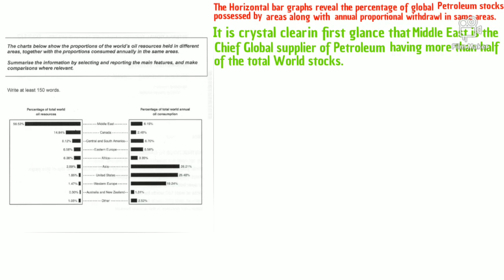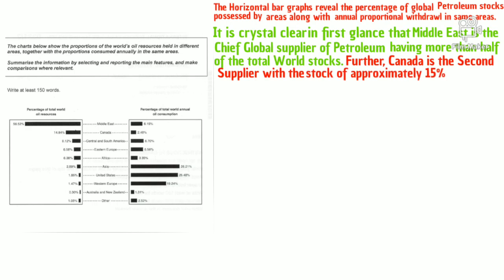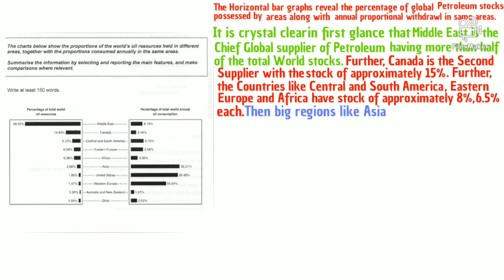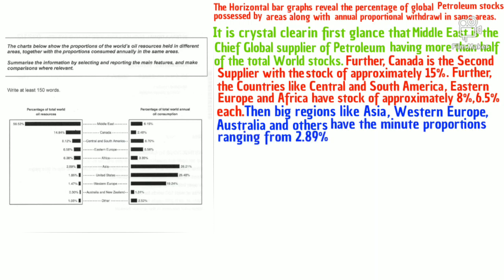Canada is the second supplier with a stock of approximately 15 percent. Further, countries like Central and South America, Eastern Europe, and Africa have stocks of approximately 8 percent, 6.5 percent, and 6.5 percent each. Then larger regions like Asia, the United States, Western Europe, Australia, and others have minor proportions ranging from 2.89 percent down to 1 percent, in serial order.